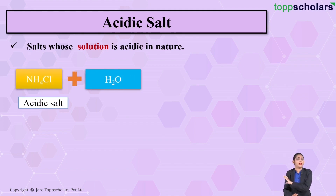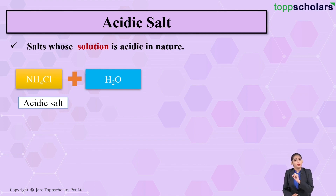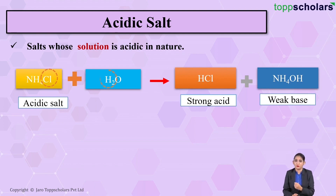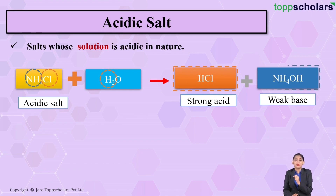For example, ammonium chloride is an acidic salt. When we take ammonium chloride and dissolve it in water, it forms a solution. During this formation of solution, the chloride ion of ammonium chloride combines with the hydrogen ions of water, giving you HCl. As we know, HCl is a strong acid — hydrochloric acid. Whereas the ammonium ions combine with the OH⁻ ions of water and give you ammonium hydroxide, which is a weak base.